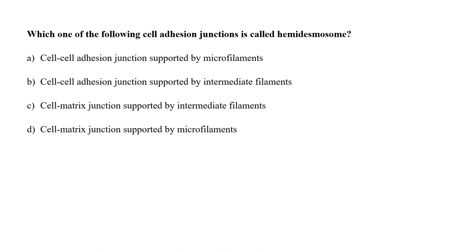Which one of the following cell adhesion junctions is called hemidesmosomes? A. Cell-cell adhesion junction supported by microfilaments, B. Cell-cell adhesion junction supported by intermediate filaments, C. Cell-matrix junction supported by intermediate filaments, or D. Cell-matrix junction supported by microfilaments? Cell-cell adhesion junctions supported by microfilaments are termed adherence junctions; those supported by intermediate filaments are called desmosomes. Cell-matrix junctions supported by intermediate filaments are called hemidesmosomes. So the correct answer is option C.